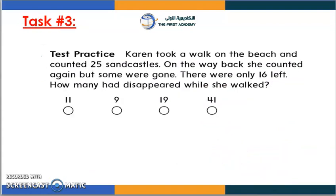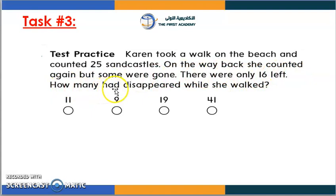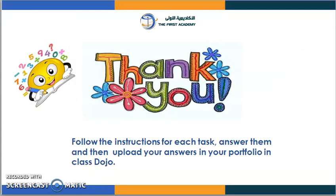For the final task, it's a test practice. Let's read the question. Karen took a walk on the beach and counted 25 sand castles. But on the way back, she counted again and some were gone — there were only 16 left. How many had disappeared while she walked? Thank you so much for listening. I hope you followed the instructions for each task and answered them all. Please upload your answers in your portfolio on ClassDojo. Thank you so much and have a great day.